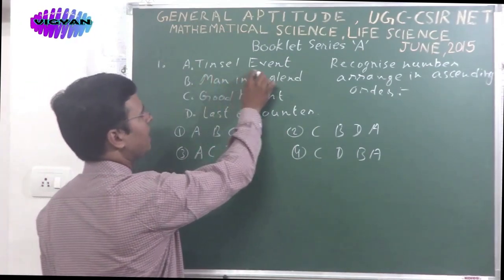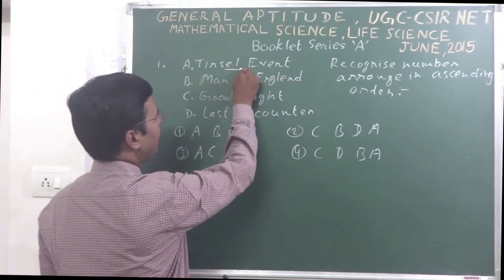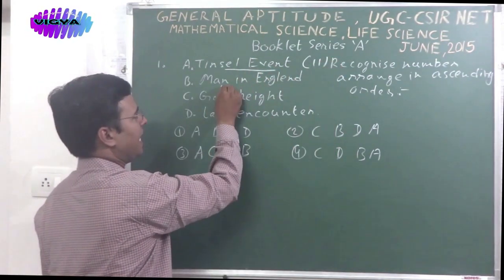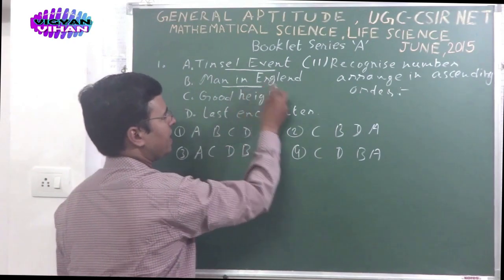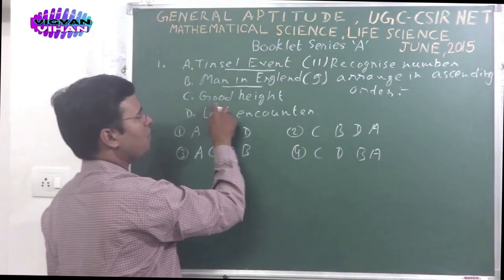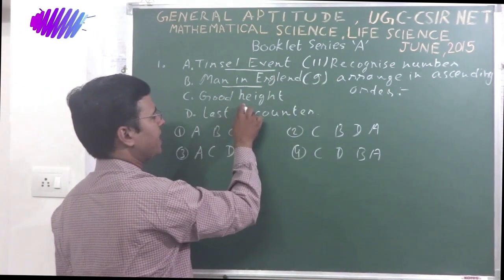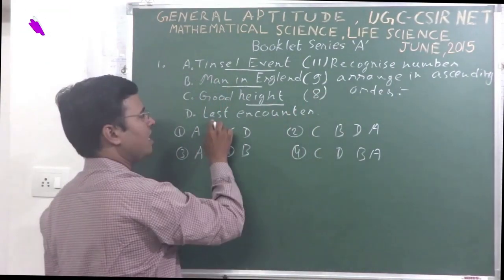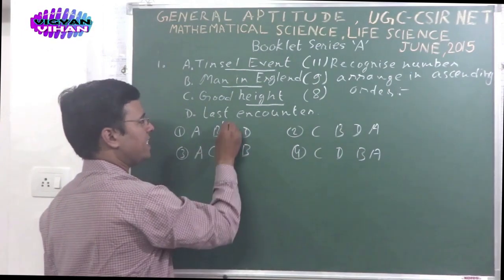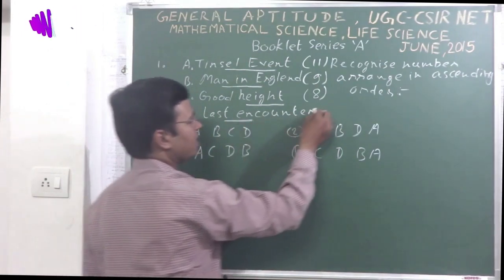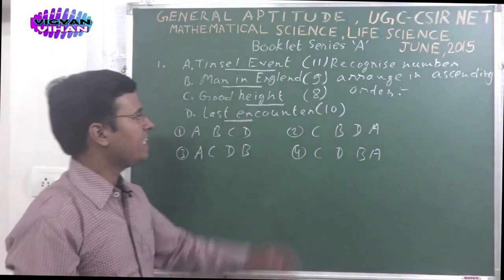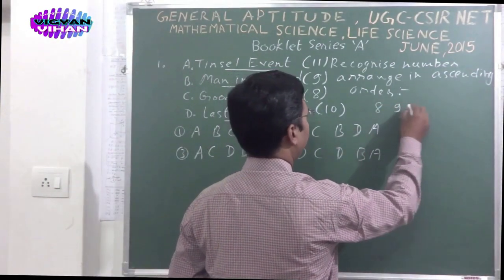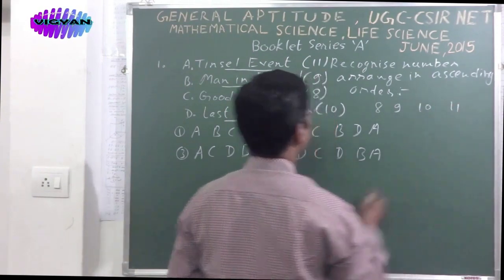So start first. Tinsel event: E-L-E-V-E-N, that is 11. Men in England: N-I-N-E, that is 9. Good height: E-I-G-H-T. Here is 8. Last encounter: T-E-N, that is 10. In ascending order, let's arrange them: 8, 9, 10, 11.